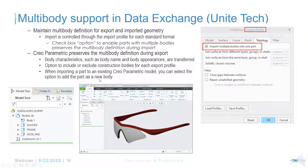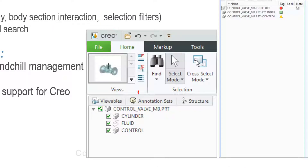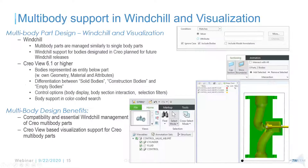This is quite useful for users working with non-CREO files, and multi-body support is available across multiple areas. In terms of visualization and Windchill support: starting CREO View 6.1, if your CREO part file has bodies and you export it to a PVZ file, CREO View 6.1 understands to display those bodies. For example, a part with a construction body for fluid cylinder and a control body for the plunger will be visible in CREO View.